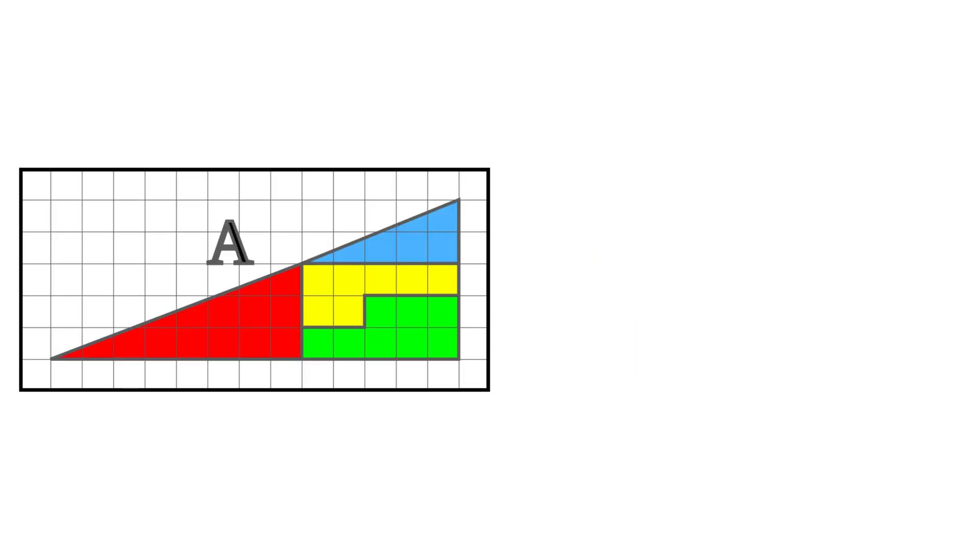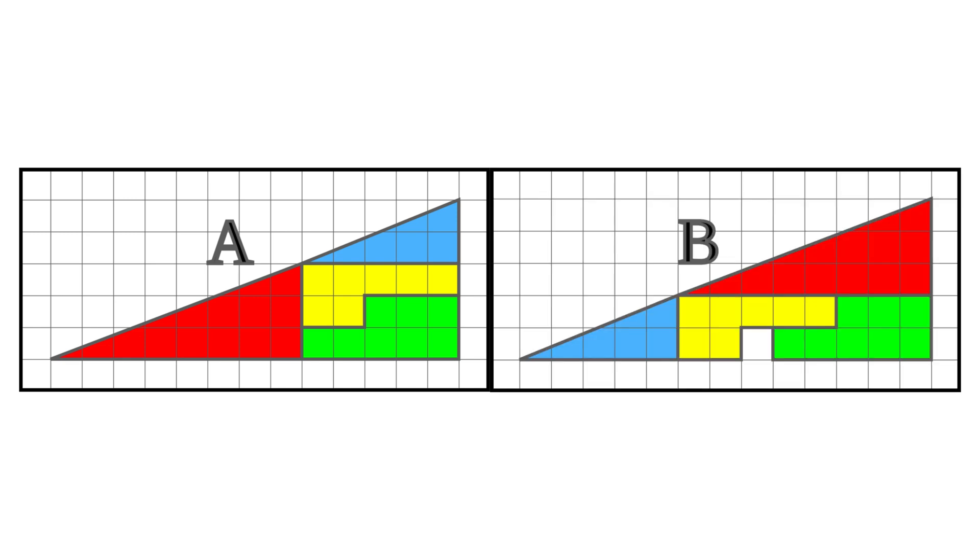In the first arrangement, they appear to occupy a total area without gaps, whereas in the second rearrangement, a small empty square appears.